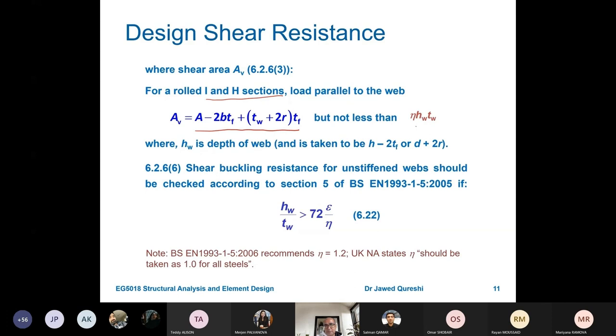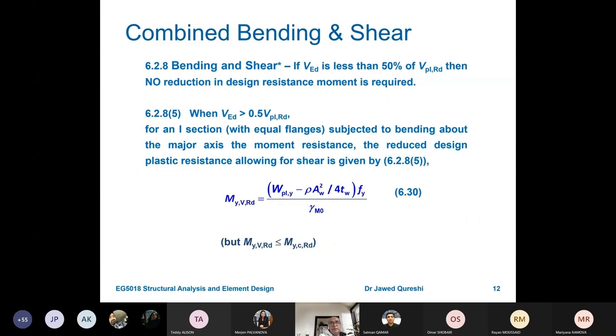But it should not be less than nu*h_w*t_w, and h_w is the depth of web. It is to be taken as h-2t_f. Again, shear buckling resistance of unstiffened webs should be checked according to section 5. Shear buckling can happen if the web is not stiffened. But in building applications, it is not a big issue.